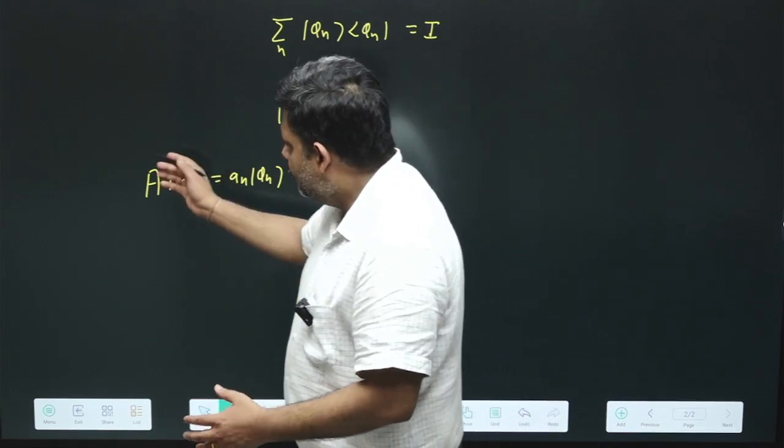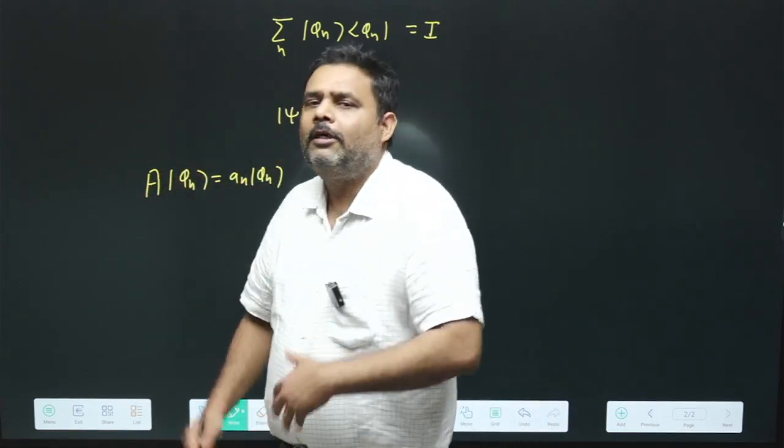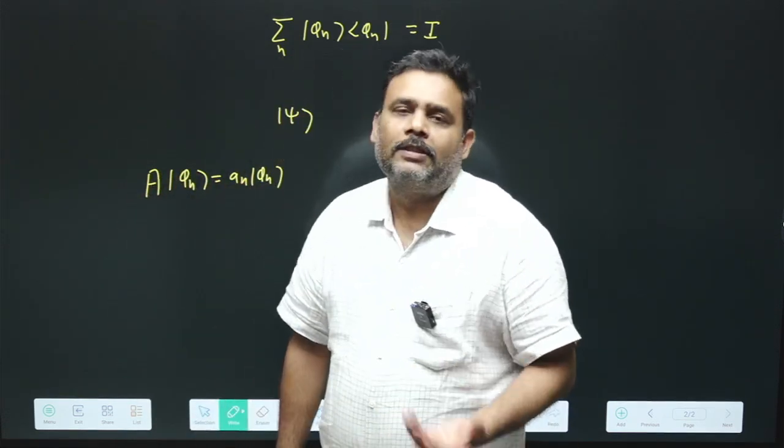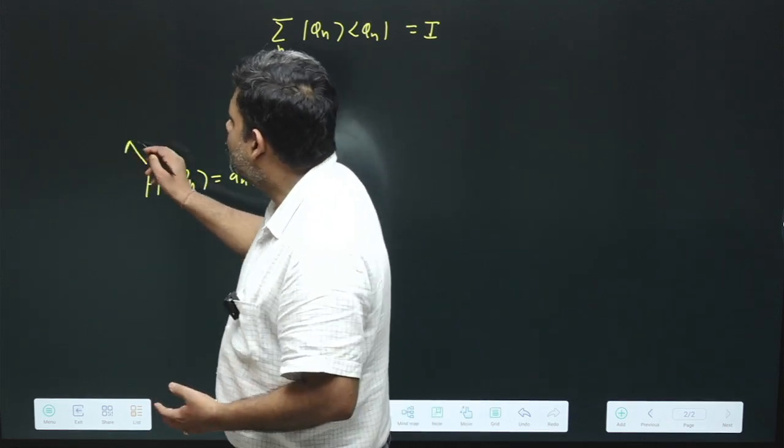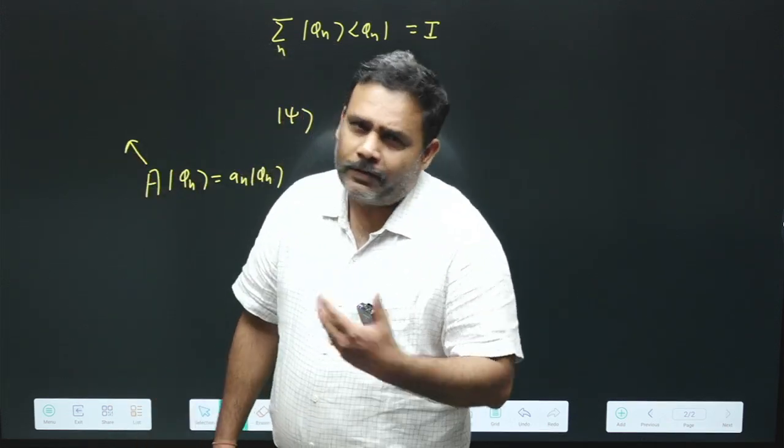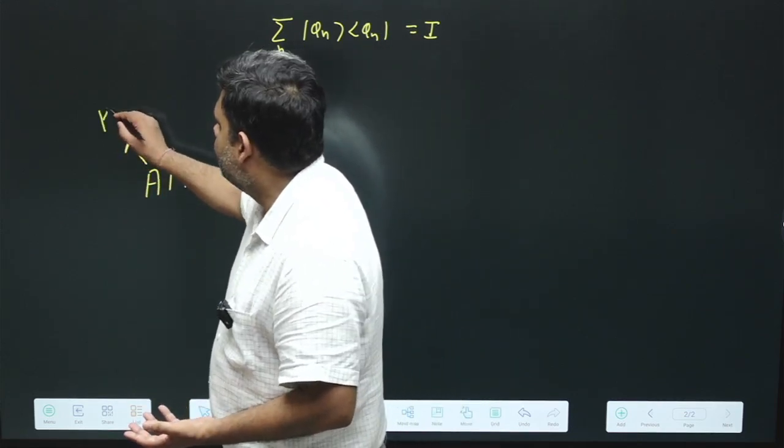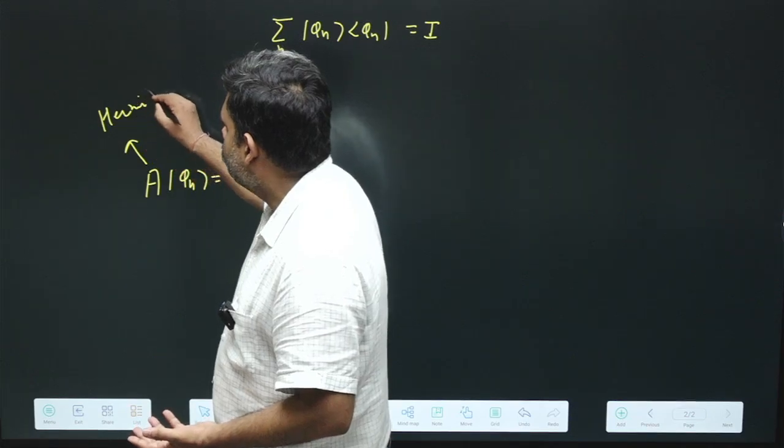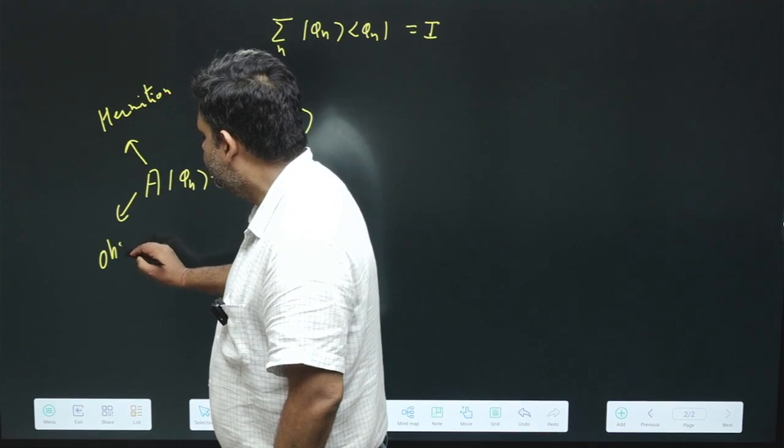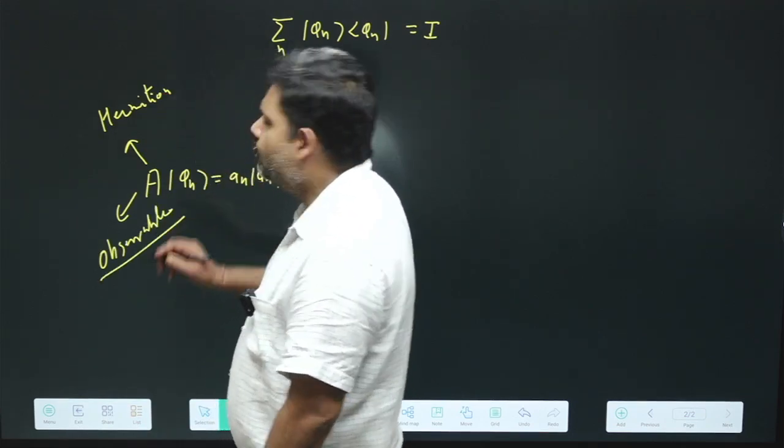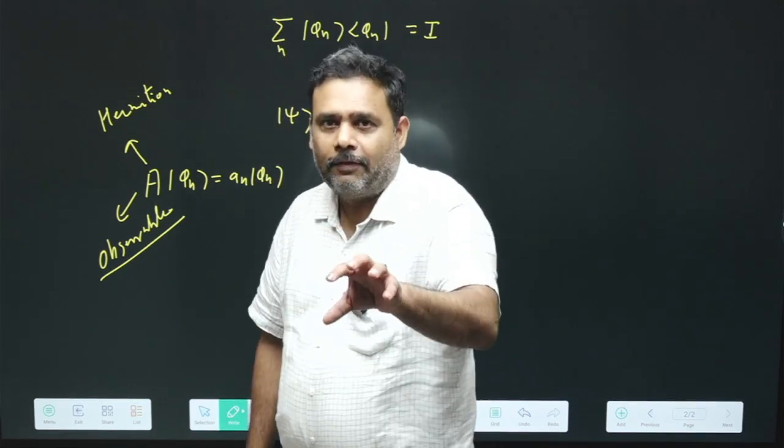And this is the real physical measurement. So this A is actually Hermitian matrix. It is Hermitian. It has real eigenvalues and this is associated to some observable, some physical quantity. That means you can observe it.